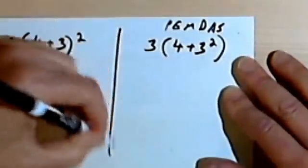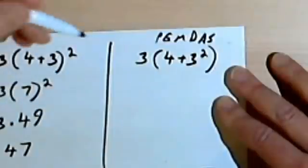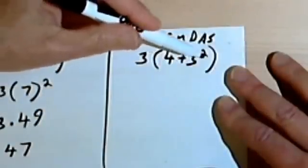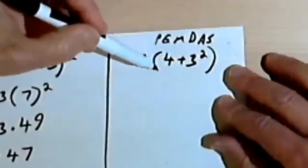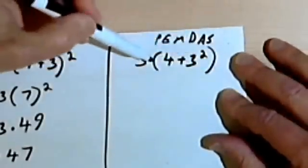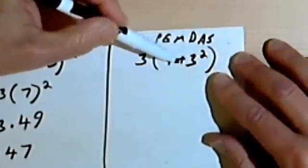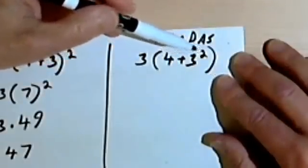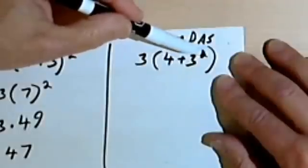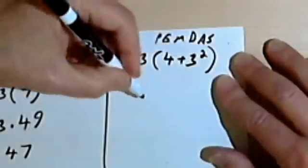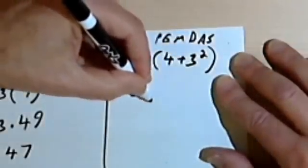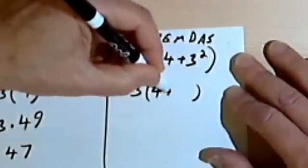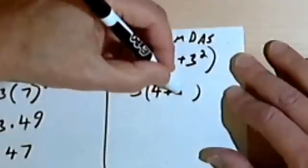Let's compare that with this over here. Here we have 3 times the expression (4 plus 3²). I've got to first look inside my parentheses, and inside the parentheses I have addition and also an exponent. The exponent comes before addition, so I've got to deal with the exponent first. So I'm going to write 3 times (4 plus... and 3 squared is 9).